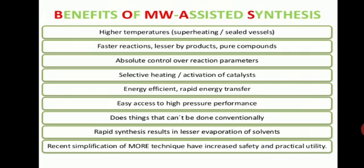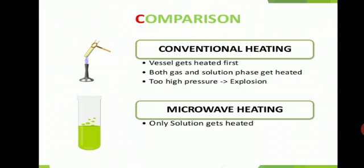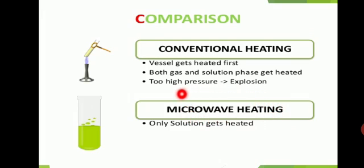Comparison of conventional heating and microwave heating: In conventional heating, the vessel is heated first and both gas and solution phase are heated, and high pressure leads to explosion risk. In microwave heating, only the solution is heated. Conventional heating requires long separation time; microwave heating requires very short separation time. Conventional heating uses higher solvent quantities; microwave heating allows lower solvent reactions. Conventional heating affects quality and quantity negatively; microwave heating maintains quality and quantity, giving high product yield. This method is therefore important and used in many industries.